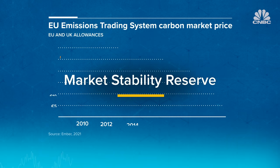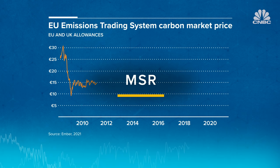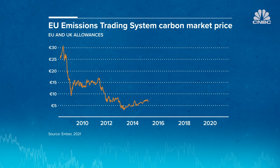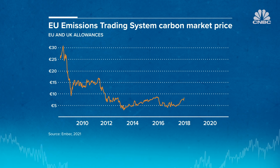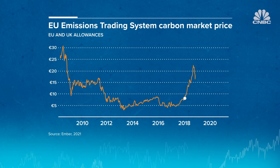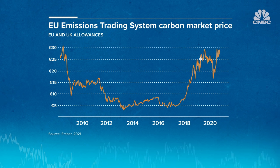However, an oversupply of carbon allowances during the 2008 financial crisis saw the price of polluting fall in the EU's trading system, reducing the incentive for businesses to change their behaviour. In response, the EU created the Market Stability Reserve, or MSR, a decade later, which gives the European Commission the ability to tighten or loosen the supply of carbon units. As a result, their price tripled from €8 per tonne of CO2 to around €25 per tonne of CO2 over a year.